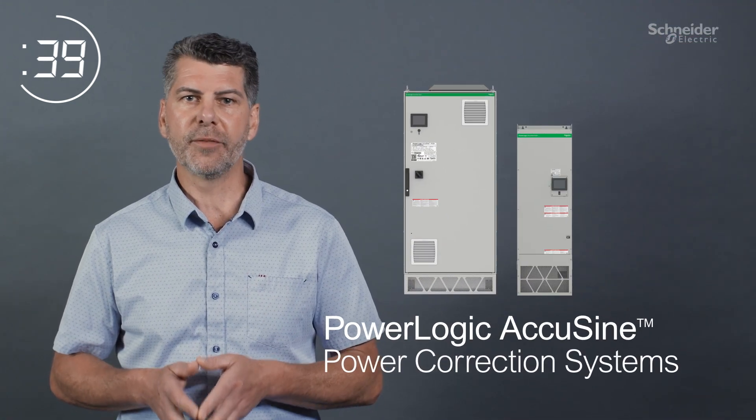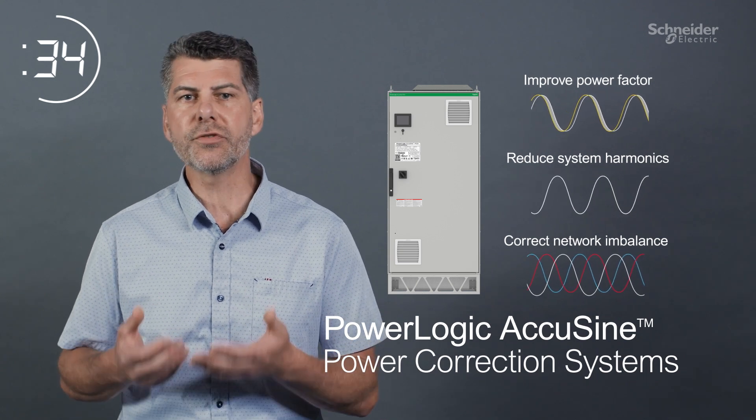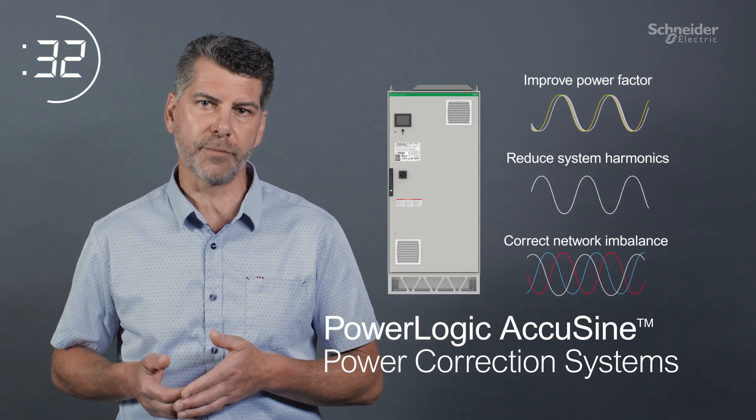PowerLogic AccuSign Power Correction Systems, an all-in-one solution that improves power factor, reduces harmonics, and corrects network unbalance.